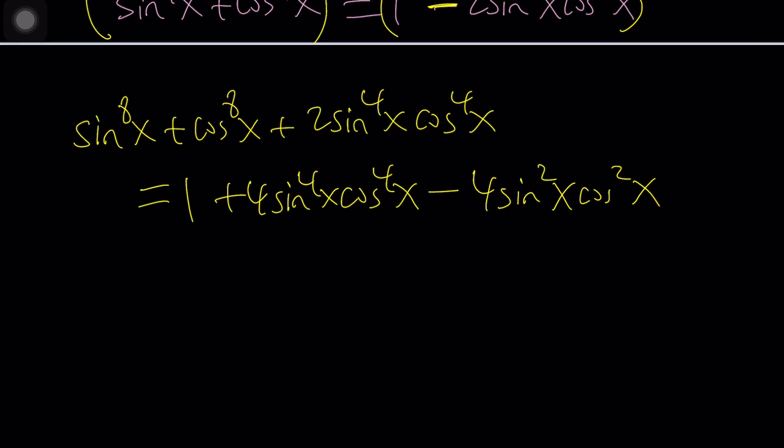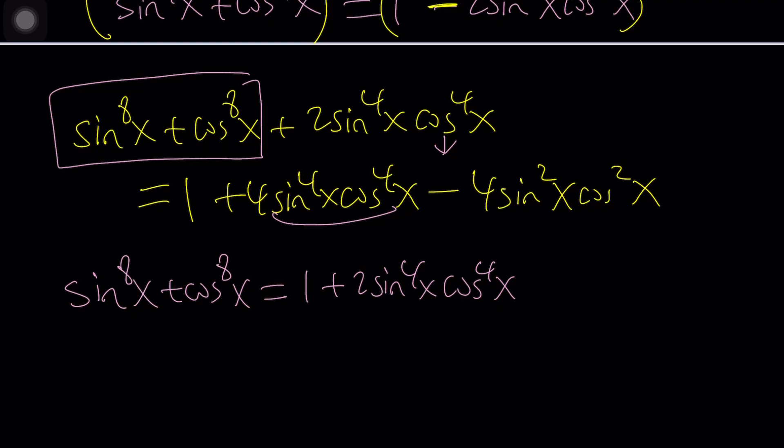Now obviously I do want to isolate sine x to the eighth plus cosine x to the eighth. Let's go ahead and do that. If you subtract this we already have four minus two is going to give us two, so there'll be one plus two sine x to the fourth cosine x to the fourth minus four sine squared cosine squared.